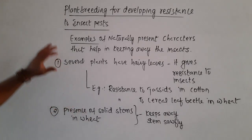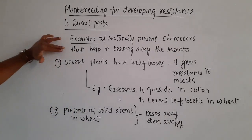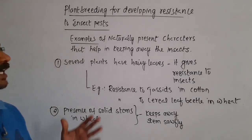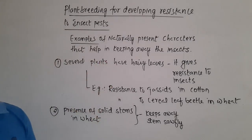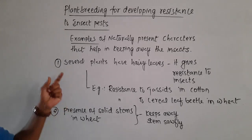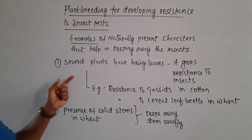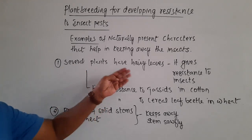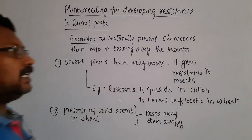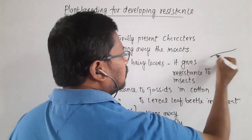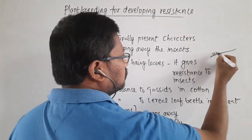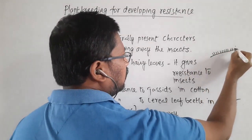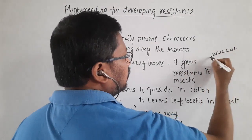There may be some morphological characters, biological characters, and physiological characters that help in keeping away the insects. We will see some examples to understand what those naturally present characters are that help in keeping insects away.